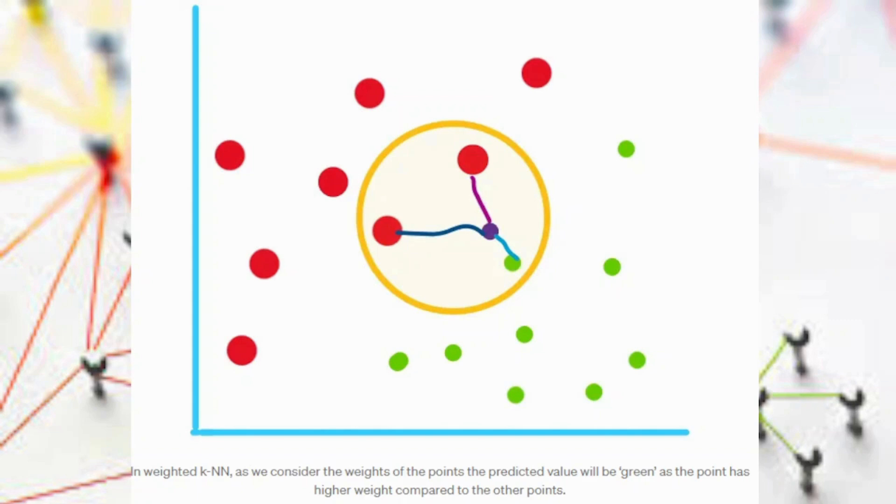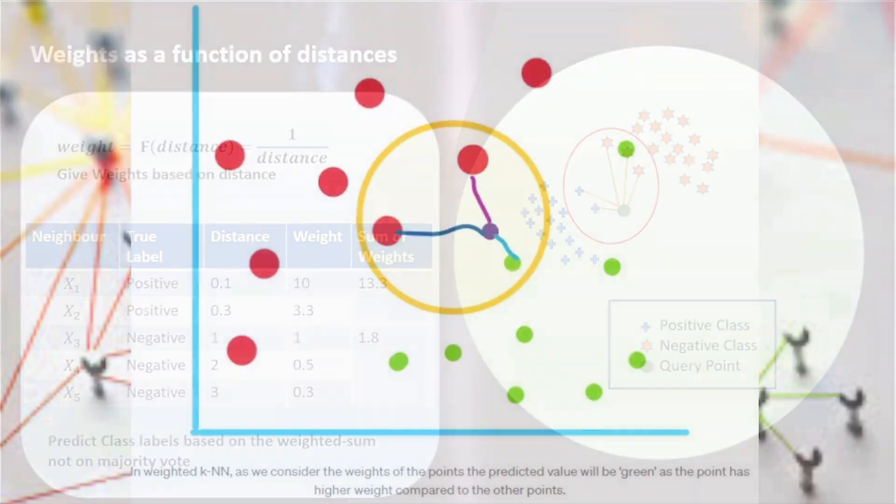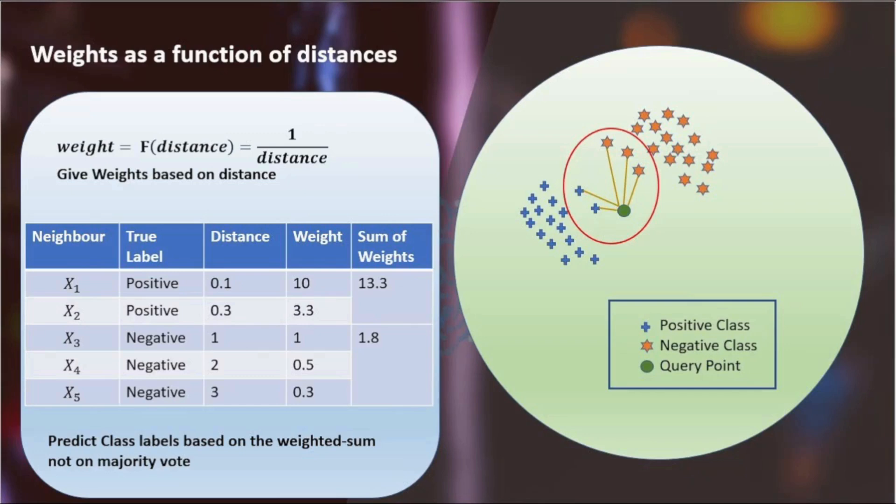There are steps involved in weighted KNN. Calculate the distance between the new data point and all data points in the training dataset. Select the K-nearest data points. Third, assign a weight to each of the K-nearest neighbors inversely proportional to their distance from the query point. In simpler terms, closer neighbors get higher weight, while farther neighbors get lower weights.